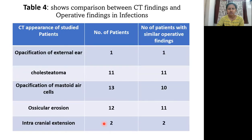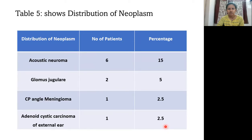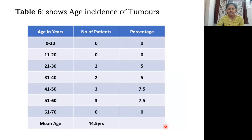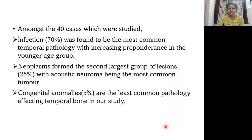This is the table showing comparison between CT findings and operative findings in infections. The extent of external ear cholesteatoma and intracranial extension is noted on HRCT and confirmed at operation. This is the table showing the distribution of neoplasms: acoustic neuroma is noted in 6 patients, glomus tumour in 2 patients, CP angle meningioma in 1, and adenoid cystic carcinoma of the external ear in 1. Among the 40 cases studied, infection was found to be the most common temporal pathology with increasing preponderance in the younger age group. Neoplasm formed the second largest group of lesions with acoustic neuroma being the most common. Congenital anomalies are the least common pathology affecting the temporal bone in our study.